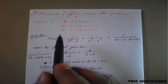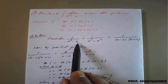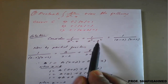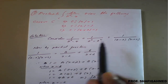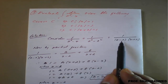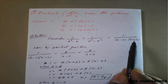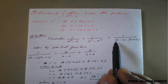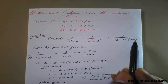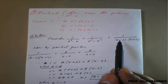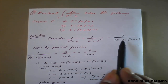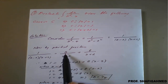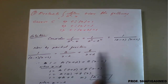Consider 1 upon z² minus 4. This can be written as 1 upon z² minus 2², which is a difference of squares in the form a² minus b². So this equals 1 upon (z minus 2)(z plus 2). We need to separate it using partial fractions: 1 upon (z minus 2)(z plus 2) equals A upon (z minus 2) plus B upon (z plus 2).